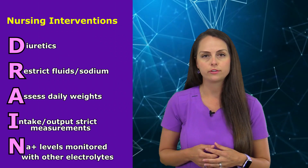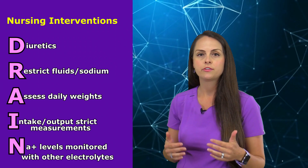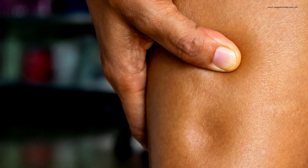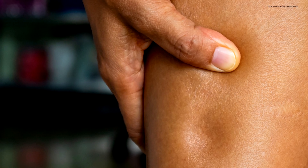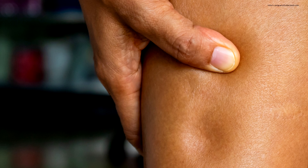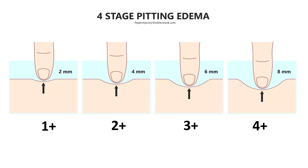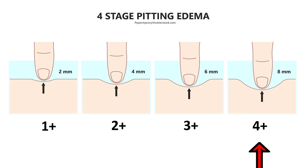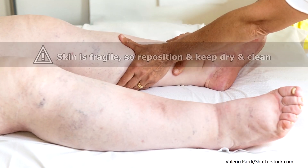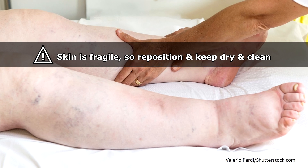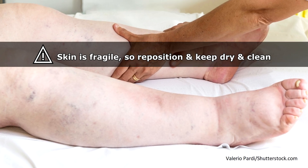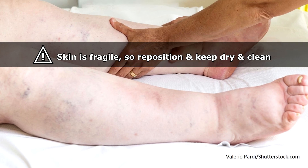Many of these patients are going to have pitting edema. Grade it using the lower leg, pressing over the fibula or tibia region. One plus is about 2 mm of pitting; two plus is 4 mm; three plus is 6 mm; and four plus — which is pretty significant — is about 8 mm. If the patient is very edematous, that skin is very fragile and can easily break down, so reposition those extremities and keep them dry and clean.